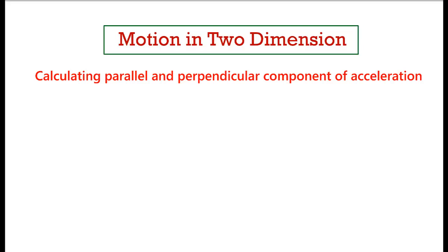Hello friends. In the last video we saw how to decompose acceleration of an object moving on a curved path. Basically there were two approaches. In the first approach you decompose the total acceleration in the Cartesian coordinate system, one along the x-axis and another along the y-axis. But when you have an object moving on a curved path, it is a good idea to decompose the acceleration vector in the radial and tangential direction.